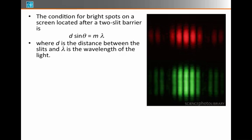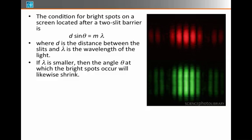It's the distance between the two slits that you construct in this two slit experiment. And lambda is the wavelength of the light. If lambda gets smaller for the same d, then theta will get smaller. In other words, the two adjacent bright spots will get closer together.